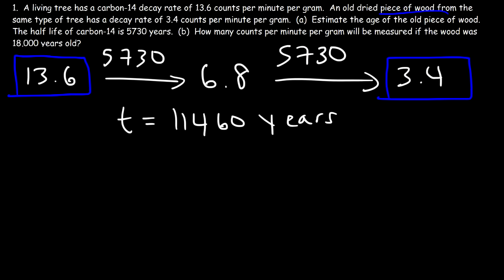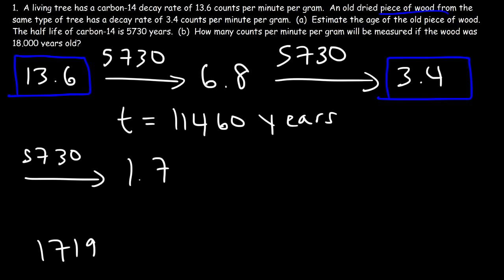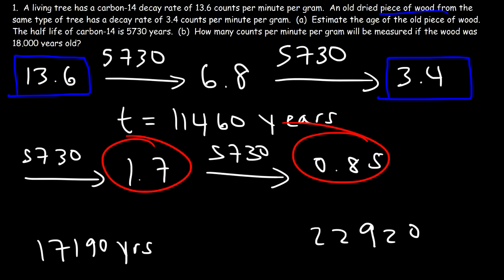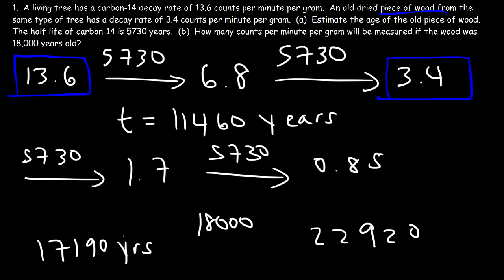Now let's move on to part B: how many counts per minute per gram will be measured if the wood is 18,000 years old? Using the half-life approach: after three half-lives (5,730 × 3 = 17,190 years) the value would be 1.7, and after four half-lives (5,730 × 4 = 22,920 years) it would be 0.85. Since 18,000 is closer to 17,190 than to 22,920, the answer should be just under 1.7 — probably more than 1 but less than 1.7 and close to 1.7.